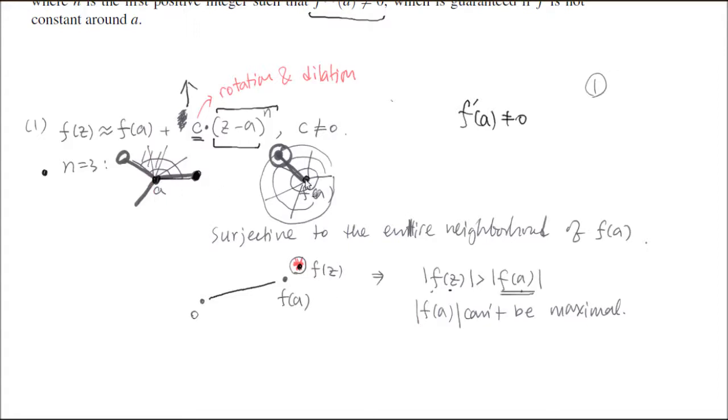This, just one-third of the neighborhood, covers completely around the neighborhood. So anything over here, there will be a map because of the surjectivity of the map.